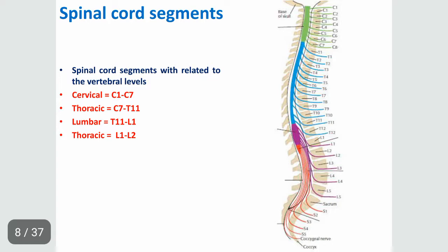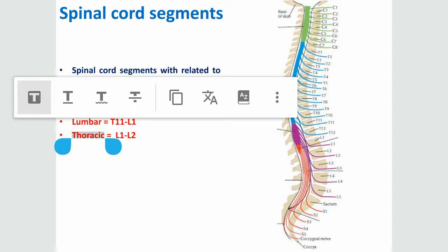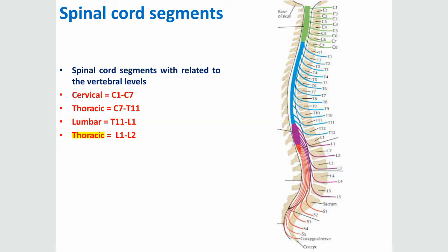Regarding spinal cord segments in relation to vertebral levels: cervical segments are opposite C1 to C7 vertebrae; thoracic segments are opposite C7 to T11 vertebrae; lumbar segments are opposite T11 to L1 vertebrae; and sacral segments are opposite L1 to L2 vertebrae.